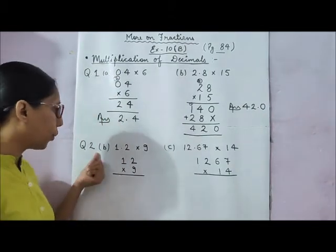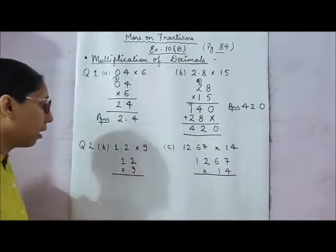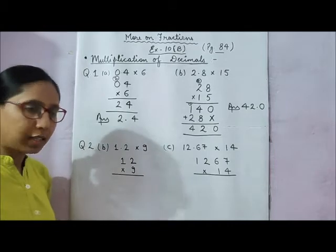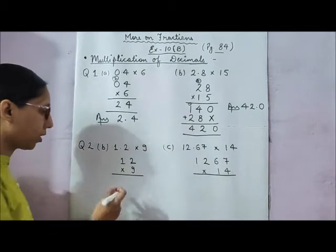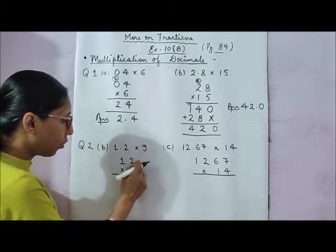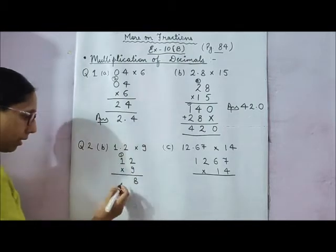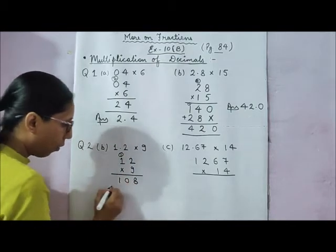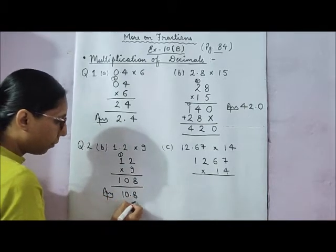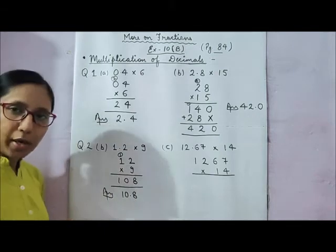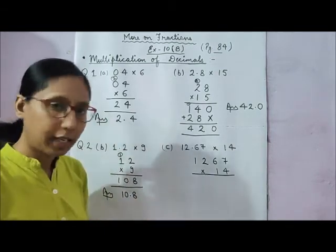Next, question number 2, parts b and c. Part b is 1.2 multiplied by 9 — we need to multiply 1.2 by 9. We take it as a whole number; we don't place the decimal point during multiplication. So 9 times 2 is 18 — write 8, carry 1. 9 times 1 is 9, plus 1 is 10. So this gives 108, but the answer is 10.8, because we need 1 digit before the point, just as there was 1 digit after the point in the question. So the answer is 10.8.